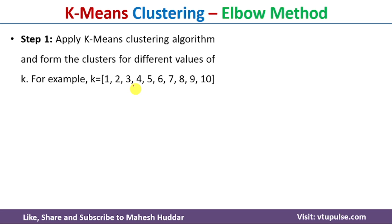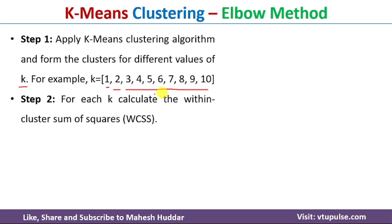The first step in the Elbow method is to apply the k-means clustering algorithm on the given dataset and form clusters for different values of k. We consider k equal to 1 and form clusters, then k equal to 2, form clusters again, and repeat for different values of k. Once clusters are formed for each value of k, the next step is to calculate the Within Cluster Sum of Squares, known as WCSS, for each value of k.